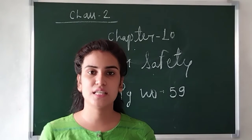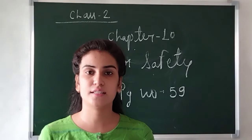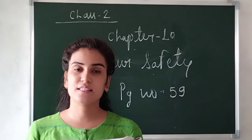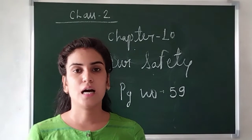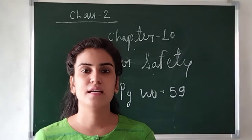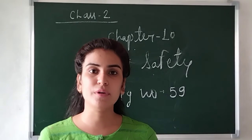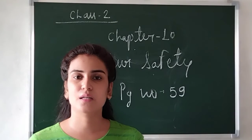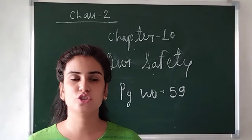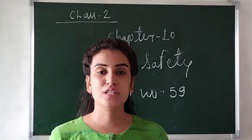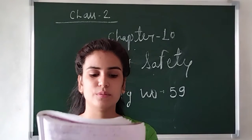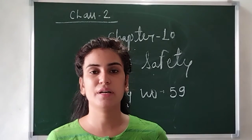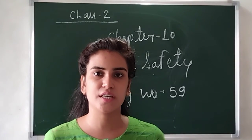Good morning dear students. Today is our EBS class and we are going to start our new chapter, chapter number 10: Our Safety. In this chapter we will read about different types of safety rules that you should follow inside the house and outside the house. Accidents can happen everywhere, so we should be careful every time. Sometimes accidents can be very dangerous, so by following safety rules we can always stay safe.